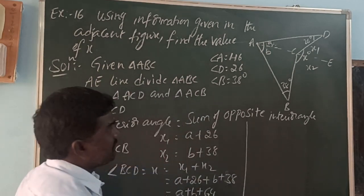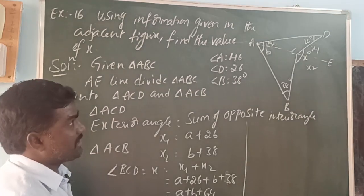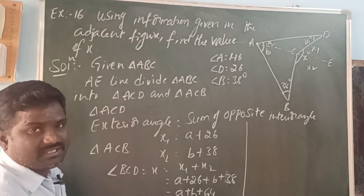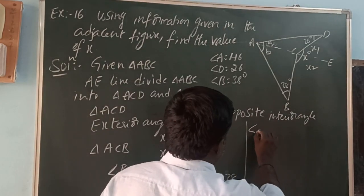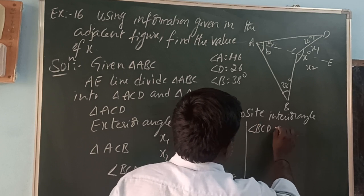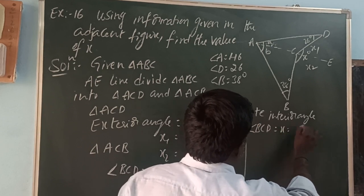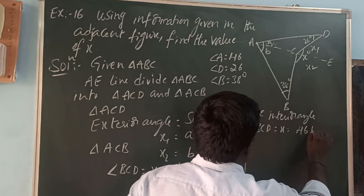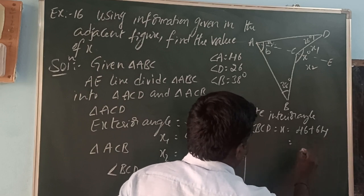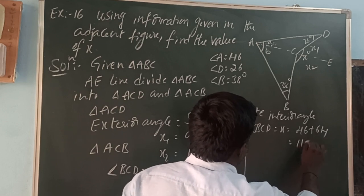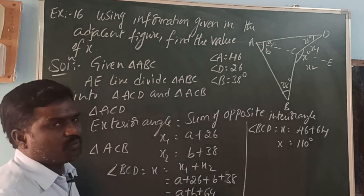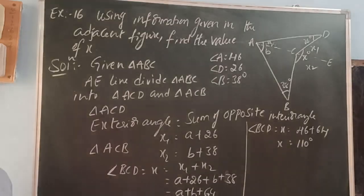A plus B is 46 degrees. So angle BCD is equal to X, which equals A plus B plus 64, that is 46 plus 64, so X is equal to 110 degrees.